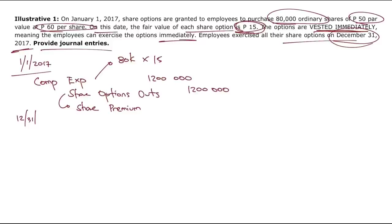On December 31, 2017, employees exercise all share options. Debit cash: the exercise price is 60 pesos per share, so 80,000 times 60 equals 4.8 million pesos. Also debit share options outstanding equal to 1.2 million pesos. Credit share capital at par: 80,000 times 50 par value equals 4 million pesos. Credit share premium for the excess: 2 million pesos.